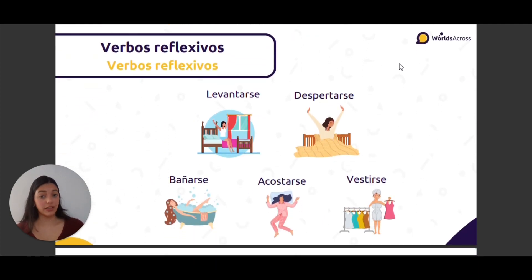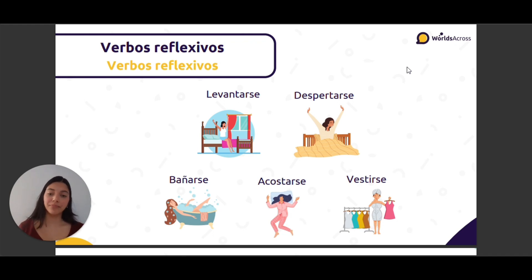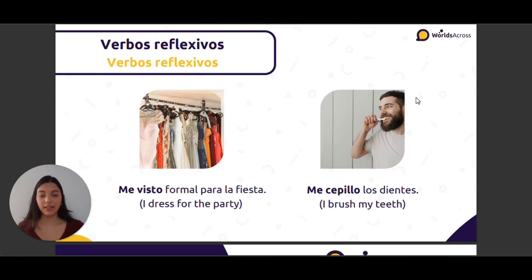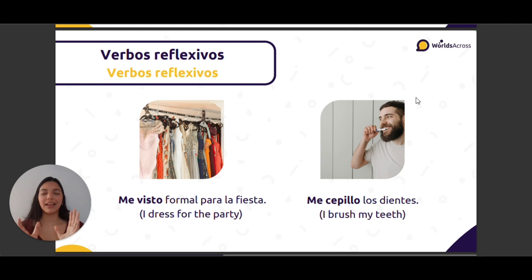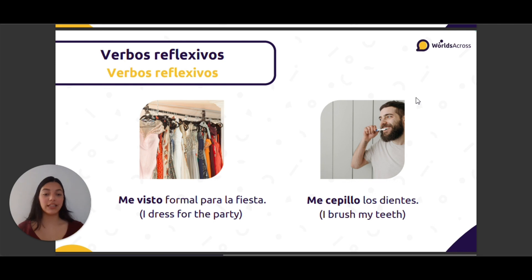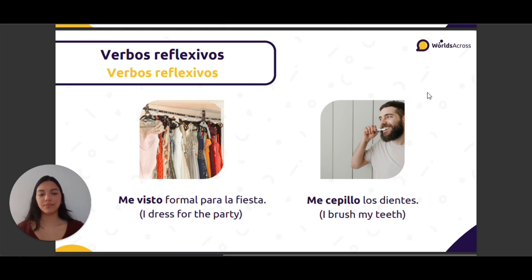Some common verbos reflexivos: levantarse, despertarse, bañarse, acostarse, o vestirse — like 'get dressed'. For example: me visto formal para la fiesta — I dress formally for the party. Me cepillo los dientes — I brush my teeth. If I want to say 'you brush your teeth': tú te cepillas los dientes.